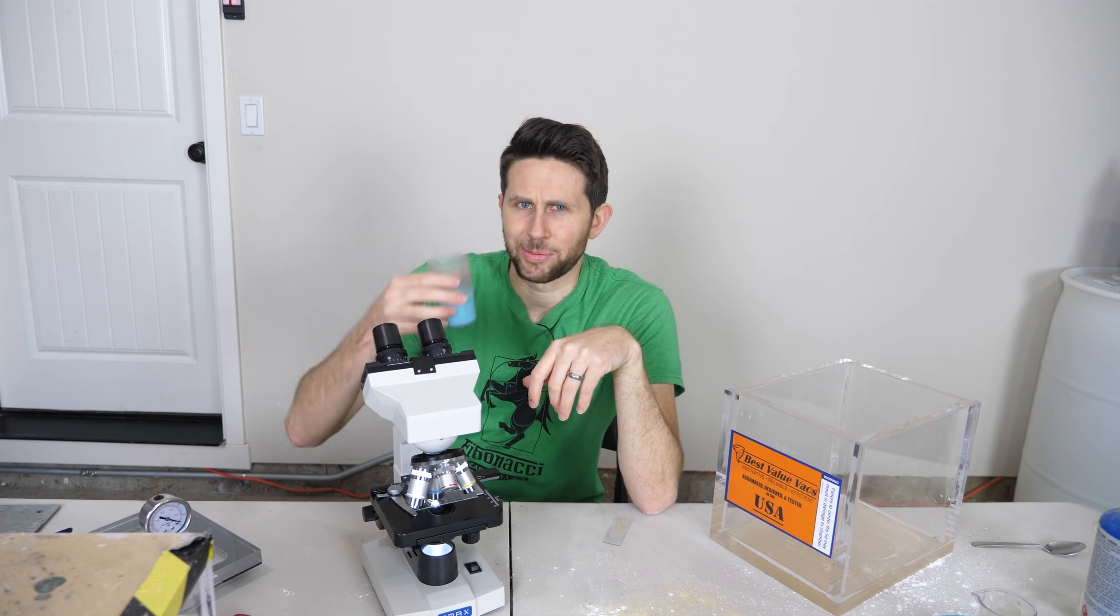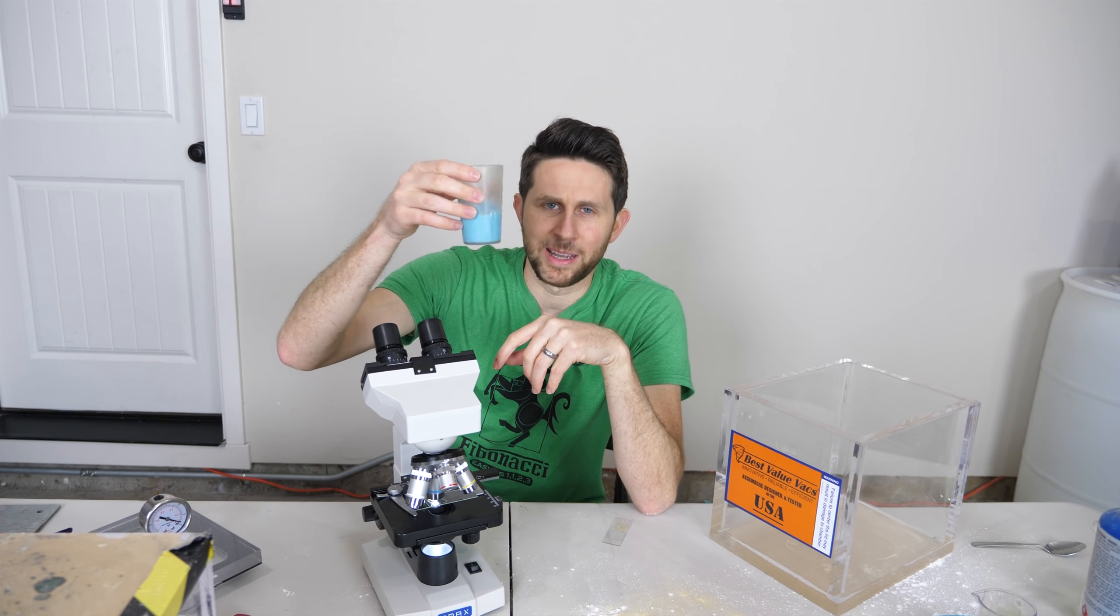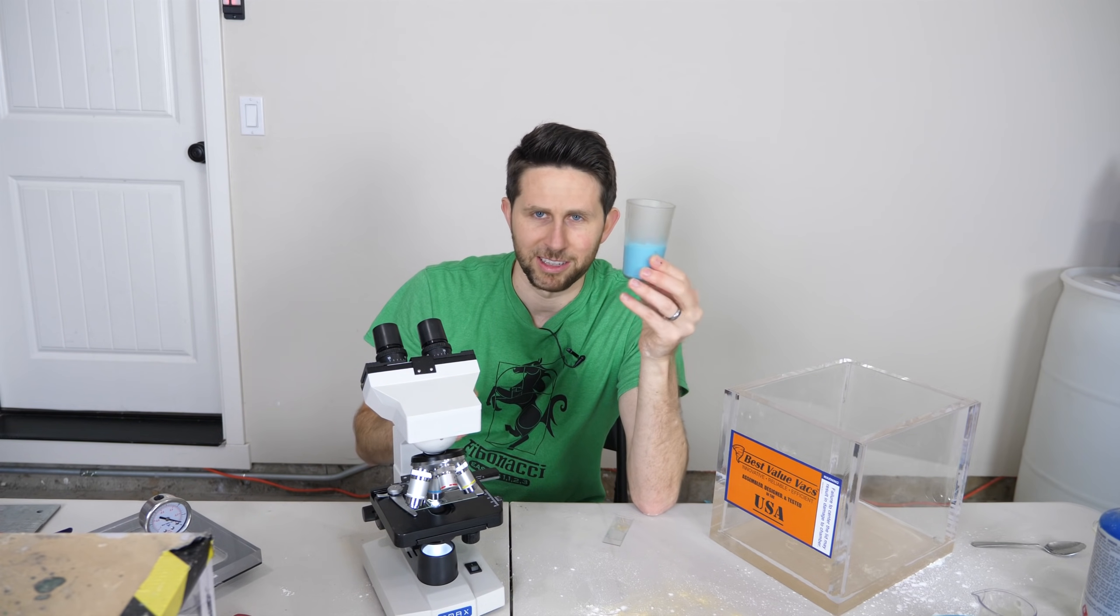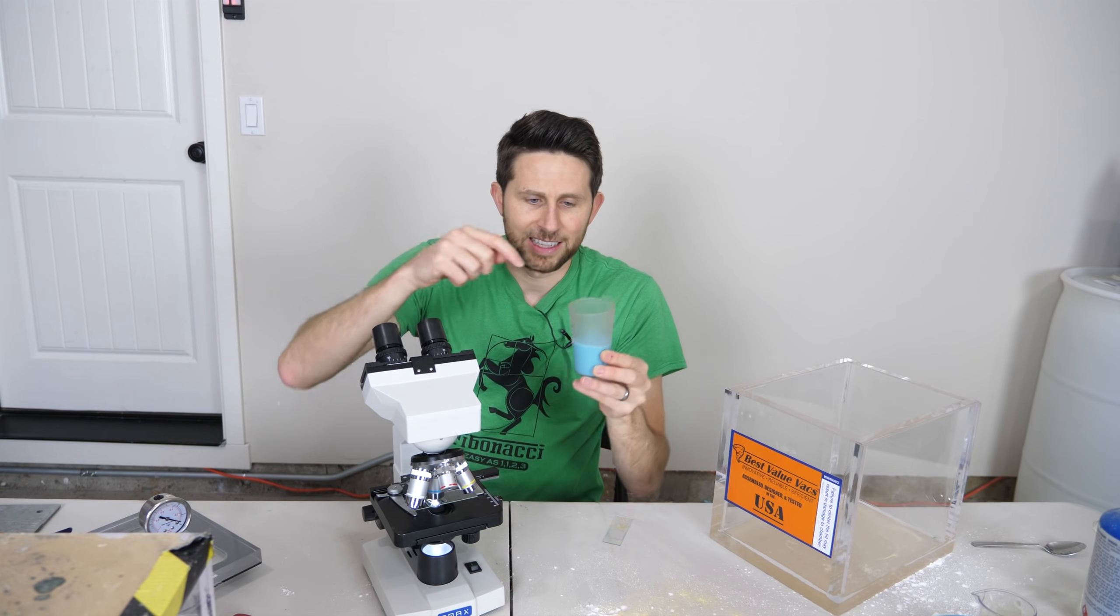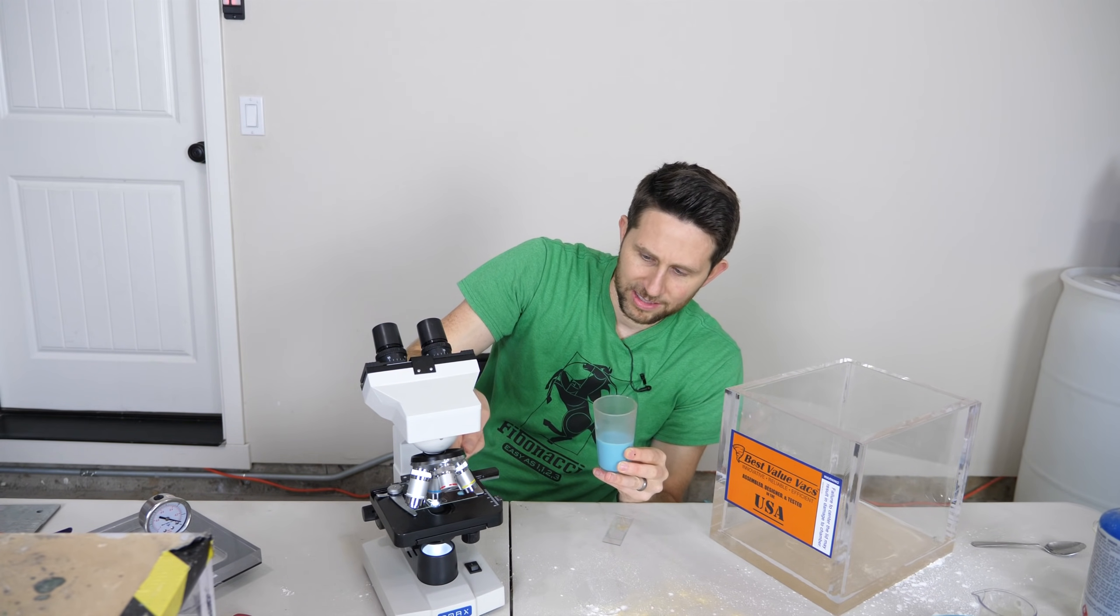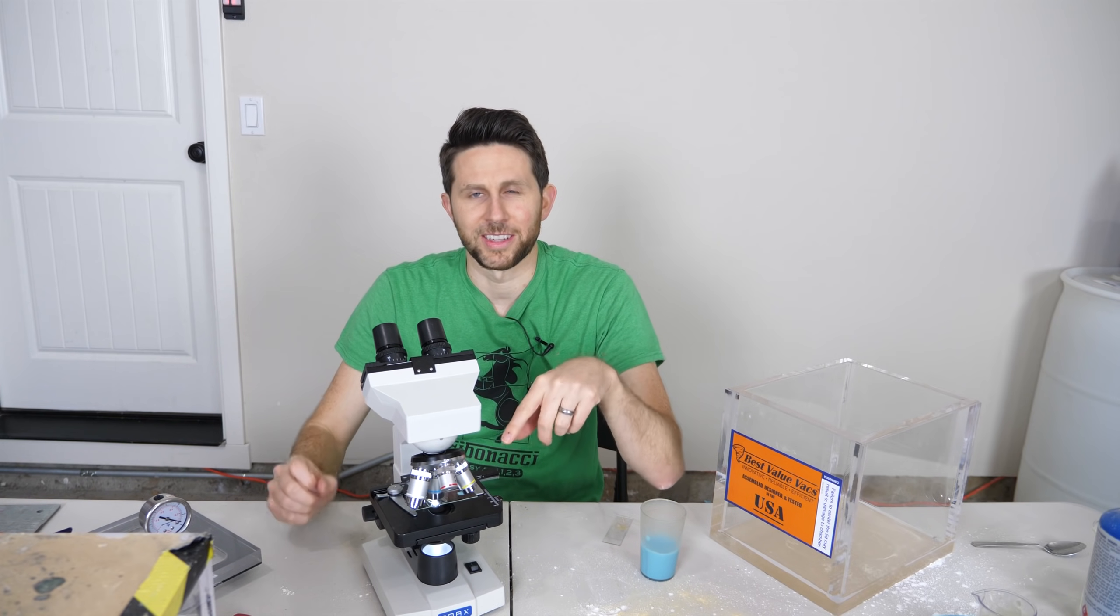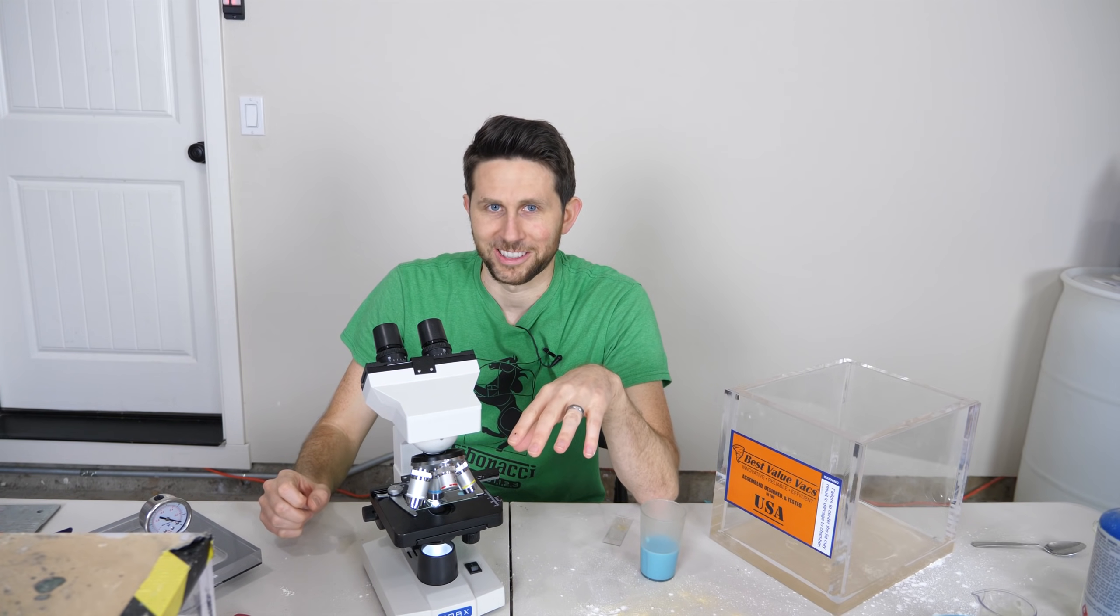So a way to do that is actually pretty easy. All you need is some milk mixed with water and put some food coloring in it like I've done here. And then you just put a drop of it on your slide and put a glass slide over the top and now look what it looks like.